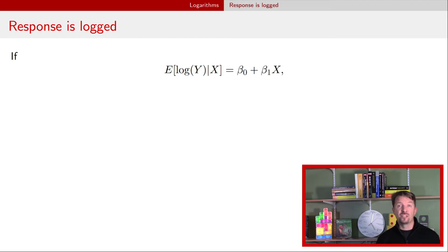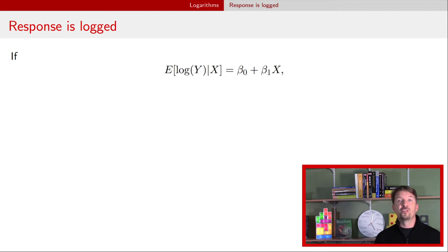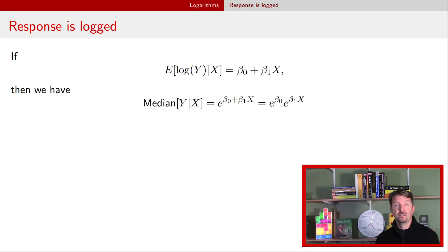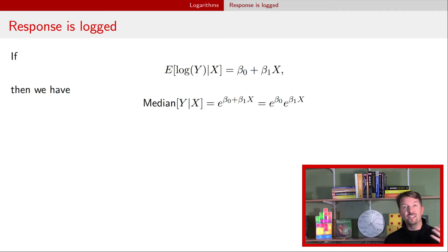We're going to start with imagining that our response is logged. So the expected value of log(y) is equal to beta naught plus beta one times x. It's a little harder to interpret on the original y scale. So we rewrite this equation using the median instead of the mean: the median of our original response y is equal to e to the beta naught times e to the beta one times x — we just exponentiate the right-hand side. This allows us to find interpretations for these parameters.